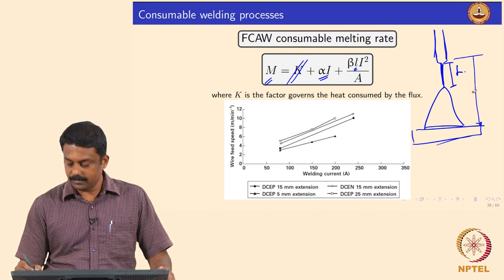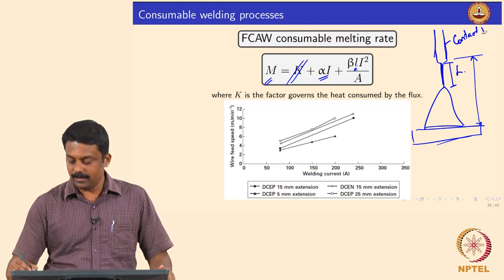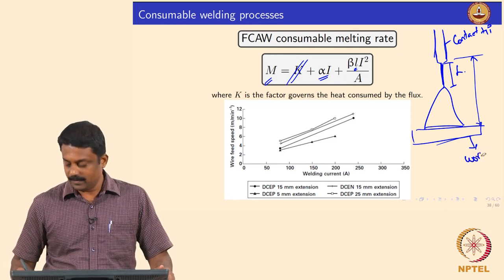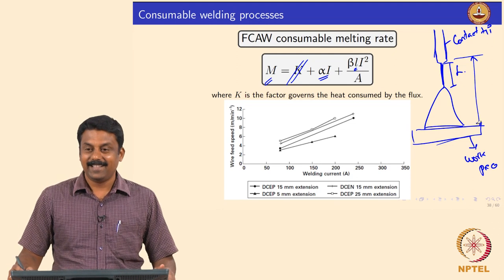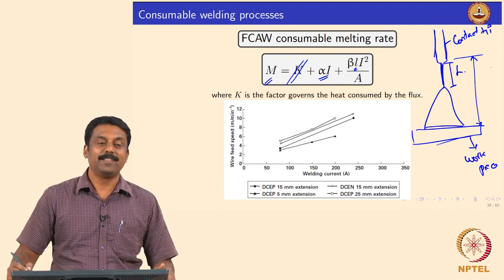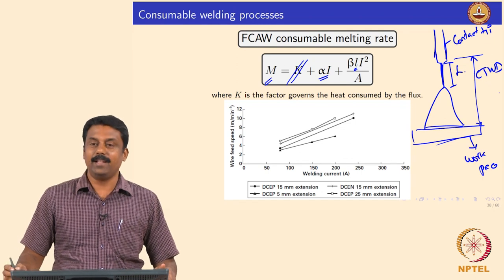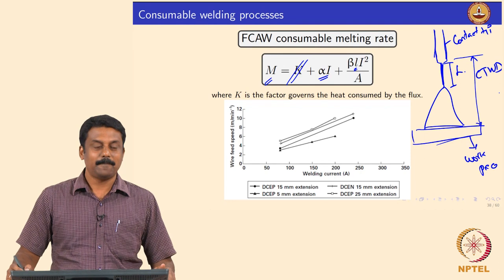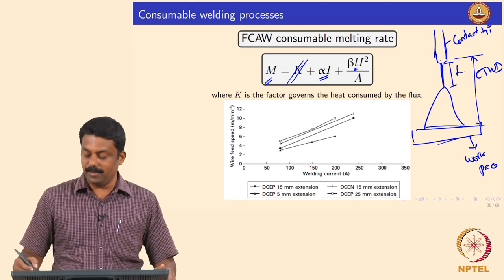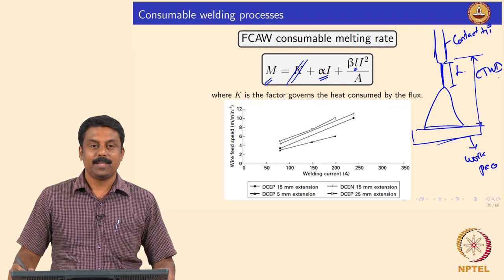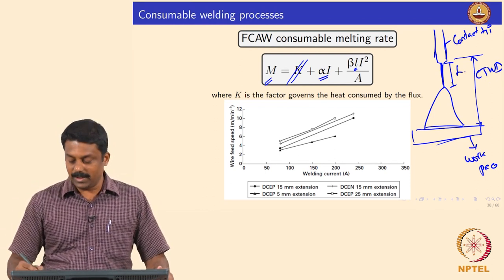The distance from the contact tube to the workpiece is the CTWD (contact tube to work distance). CTWD minus arc length equals your stick-out length. CTWD is an important parameter because it determines both the stick-out length and the arc length.